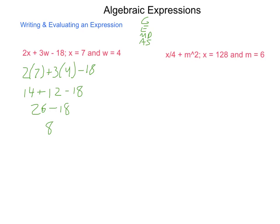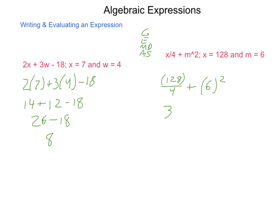X divided by 4 plus M squared. X is 128, M is 6. I'm going to go 128 divided by 4 plus 6 squared. Do we have any groups? Yes, a fraction acts as a group. 128 divided by 4 is 32, plus 6 squared is 36. Now add and subtract. We come up with a value of 68 for our final answer. So X fourths plus M squared has a value of 68 when X is 128 and M is 6.